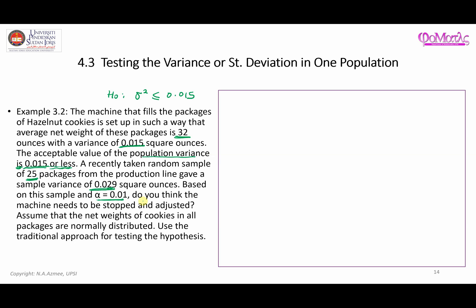Based on this sample and α = 0.01, do you think the machine needs to be stopped and adjusted? The acceptable value is 0.015 or less; if it is not within the acceptable value, the machine needs to be stopped and adjusted. Assume the net weight of cookies in all packages is normally distributed, and use the traditional approach for testing the hypothesis.